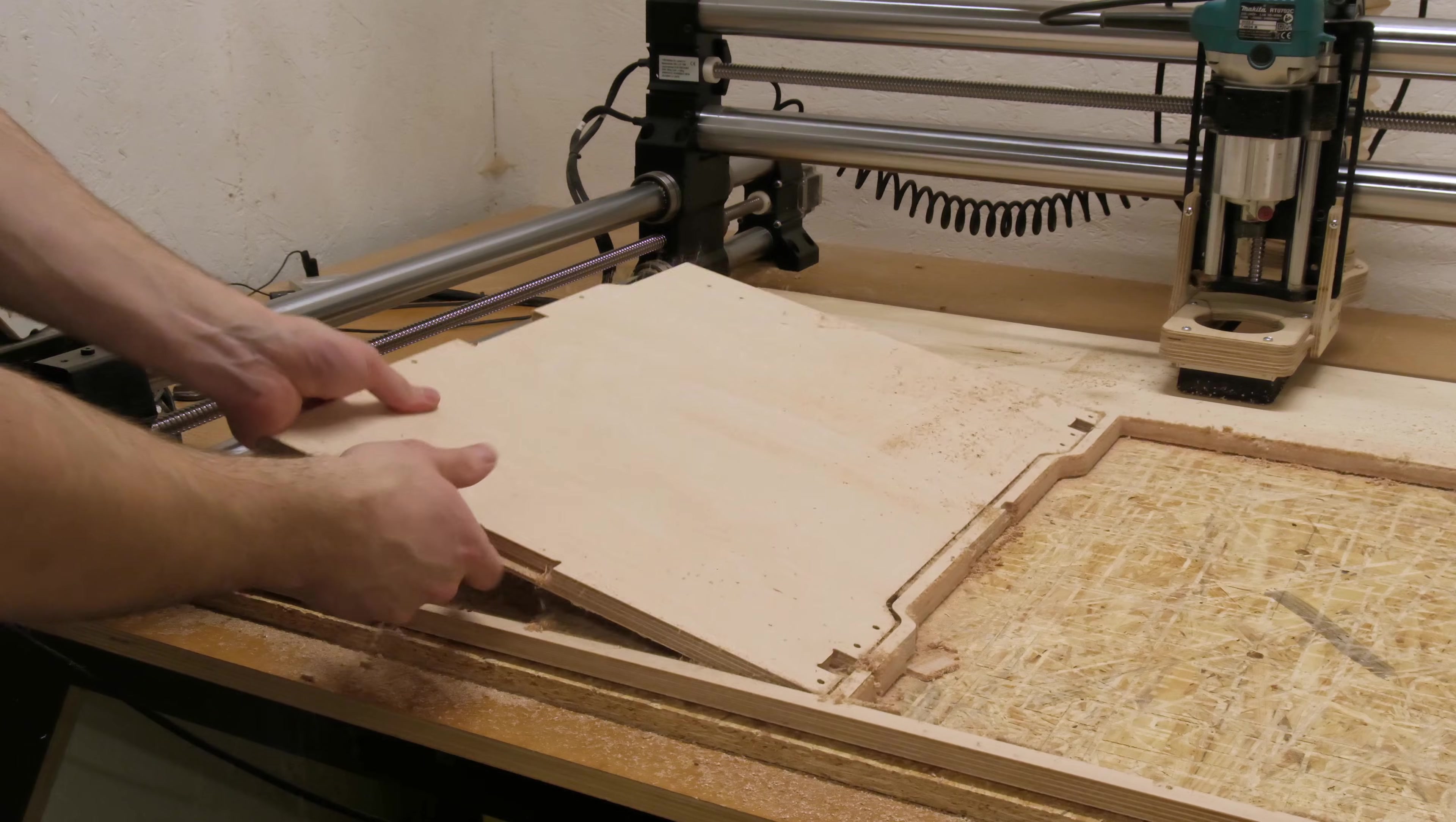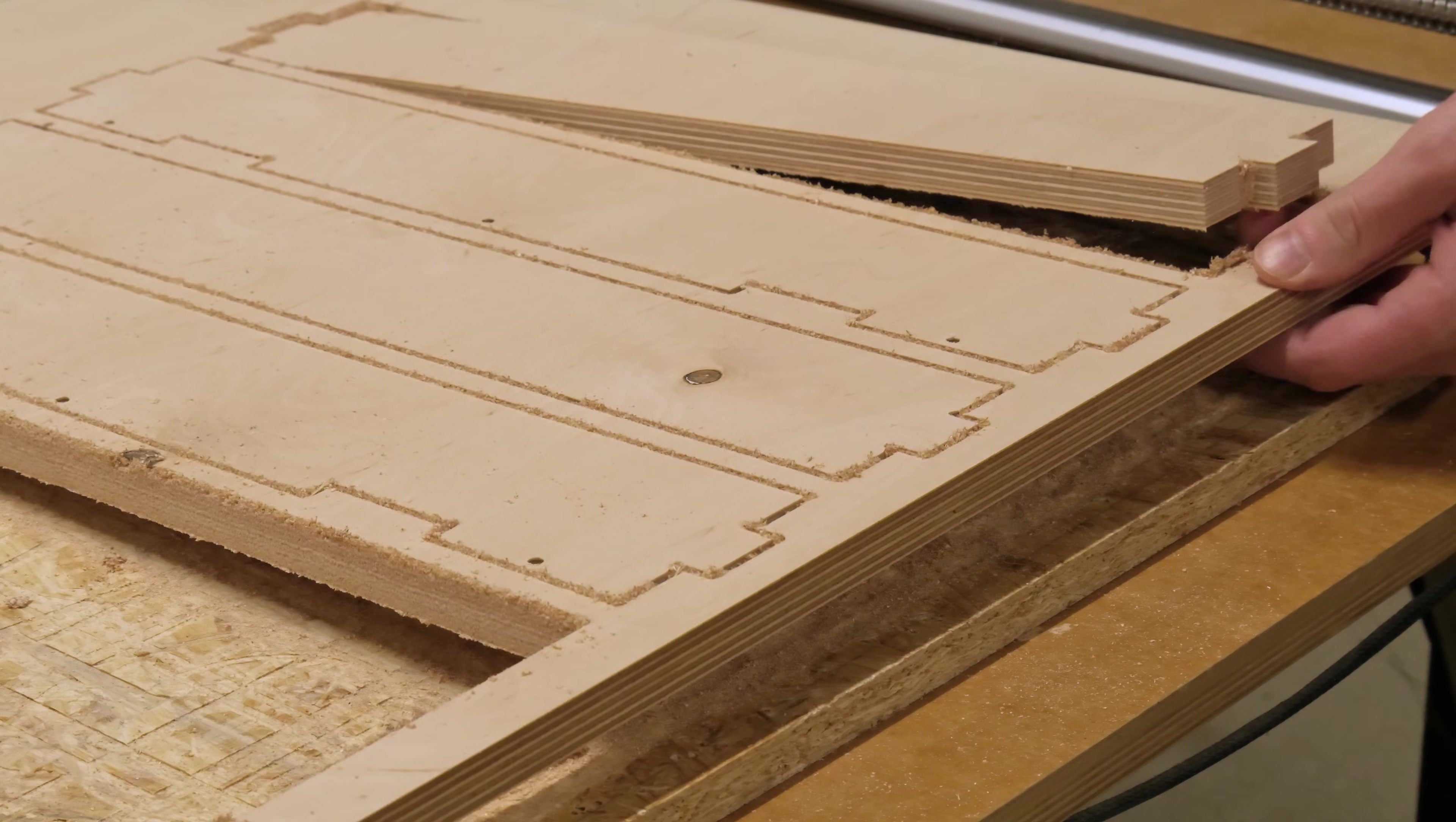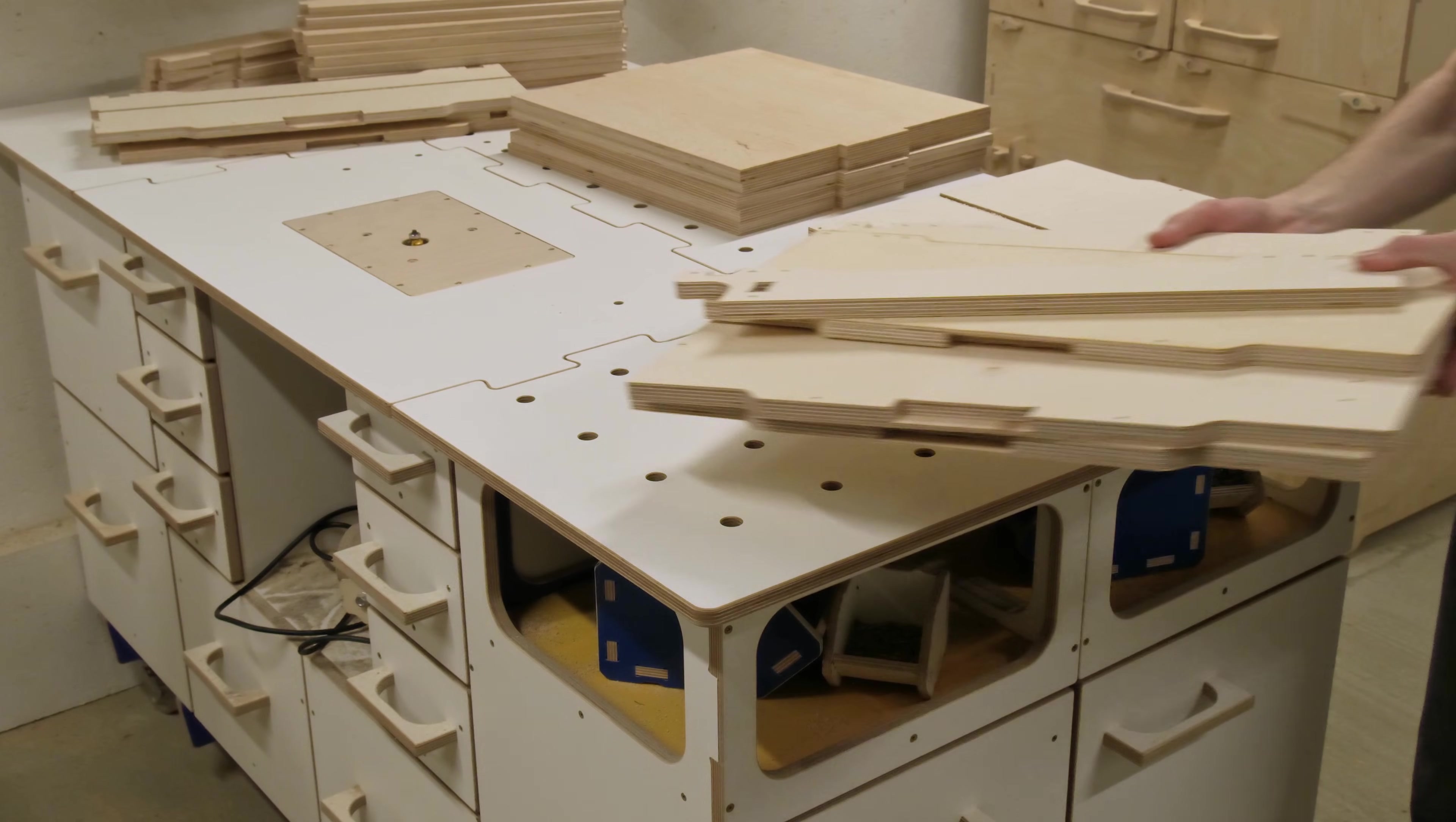The side panels for the double module are the largest components. Everything else is smaller, which makes the CNC cutting simple and efficient.